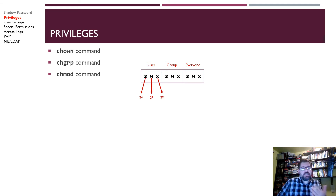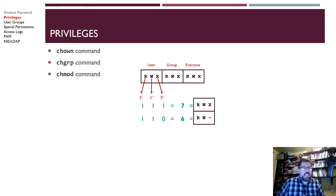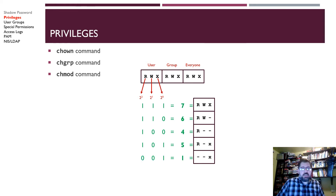One thing to remember about chmod: not every system lets you use the symbolic shortcuts. The real commands use octal notation — it's a bit in each position, similar to IP addresses. The first bit is 2^0 = 1, the second is 2^1 = 2, the third is 2^2 = 4. So if you have all 1s, that's 7 (4+2+1). Read, write, execute = 7. Read and write only = 6. Read only = 4. Read and execute = 5.